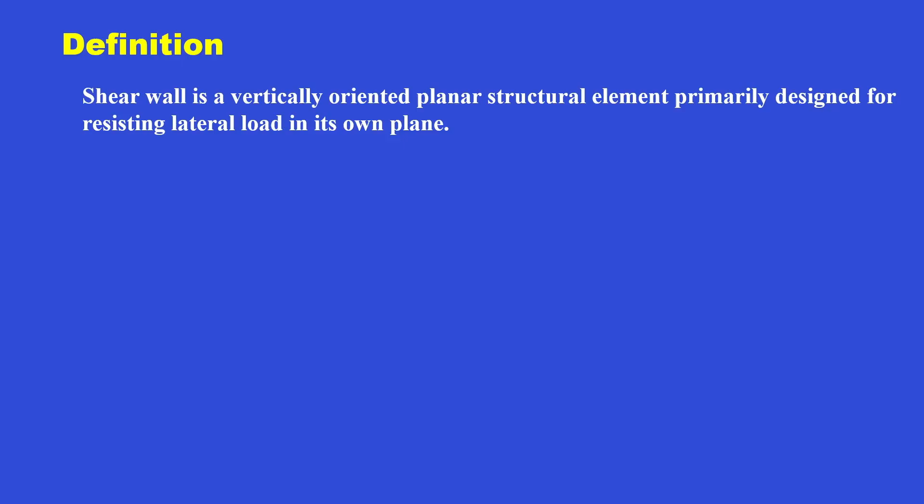The general definition of shear wall goes like this: a shear wall is a particularly oriented planar structural element primarily designed for resisting lateral load in its own plane. So it does not primarily resist any vertical load but it resists horizontal load, and that resistance is in its own plane.